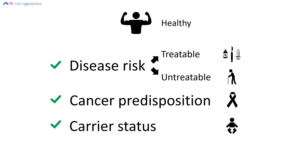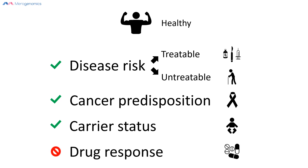You will also obtain carrier status — meaning what mutations you carry where they will not lead to disease development in you, but if you and your partner were to share the same genetic mutations, there would be a potential risk of disease developing in your child. You could use that information for reproductive planning purposes. It is important to know that this test will not provide drug response information; however, because full genome sequencing provides all of the DNA sequence, you could in theory use the sequence itself to obtain that information from an independent third party.